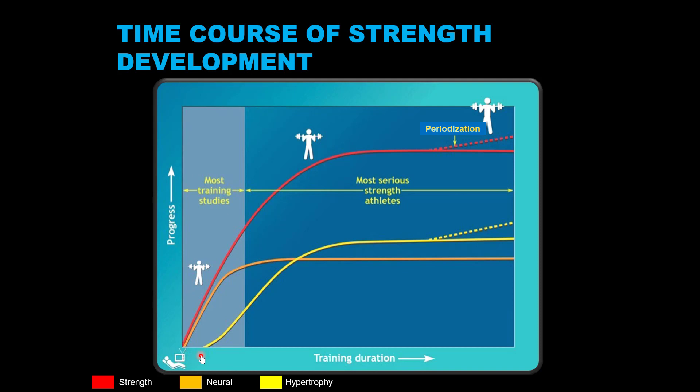Observable muscle growth takes time because the increased protein synthesis and myofiber hypertrophy resulting from it is just too small initially to be observable at the whole tissue level. Major contributions of muscular adaptations to strength development are a bit delayed compared to neural adaptations. Initially, neural adaptations contribute primarily to strength development, and towards the latter portions of a resistance training program, muscle hypertrophy or muscular adaptations become a major contributor.